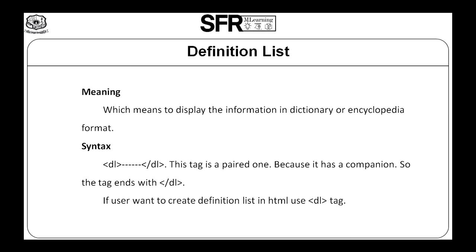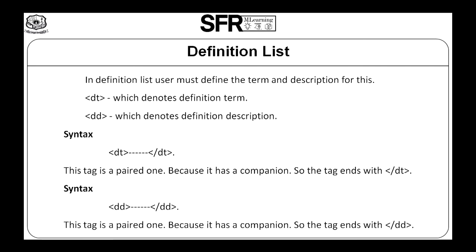Now let us see the meaning of Definition List. The Definition List is used to display the information in a dictionary or encyclopedia format. Here is the syntax of Definition List. This tag is a paired one, so the tag ends with slash DL. If a user wants to create a Definition List in HTML, use the DL tag. In a Definition List, the user must define the term and description. DT denotes Definition Term. DD denotes Definition Description.